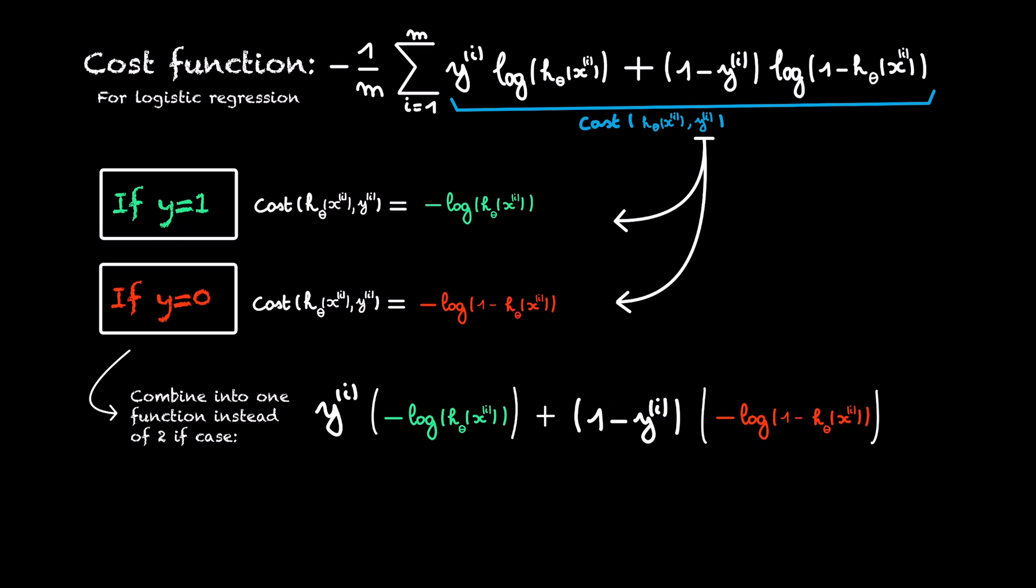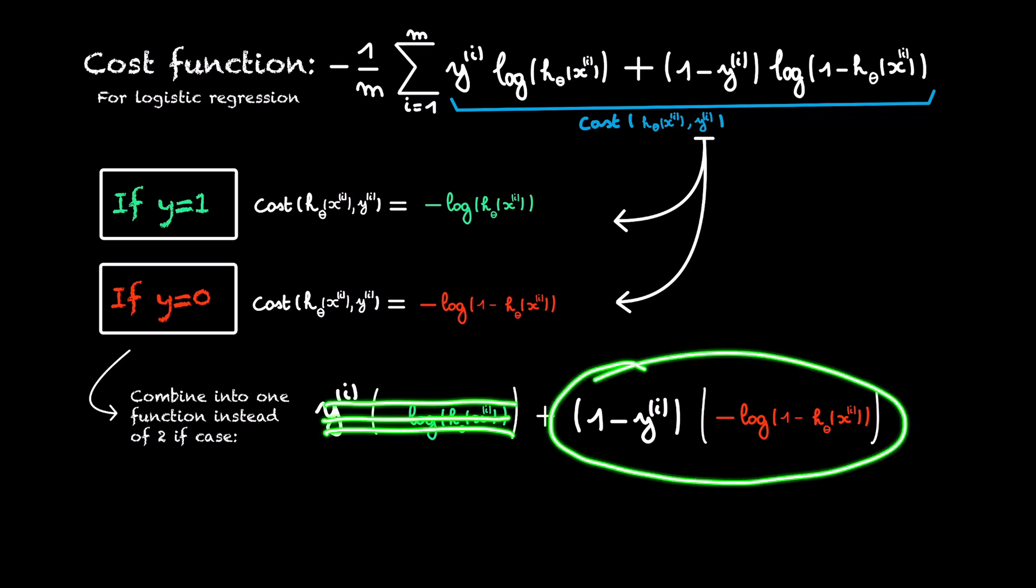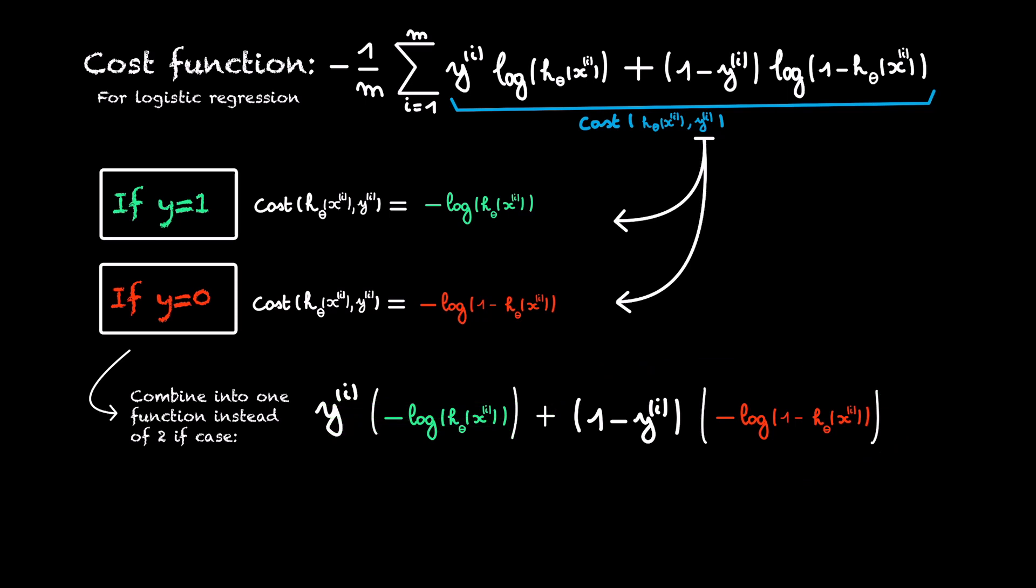if y is zero, this first term will fall away. And our cost function will reduce to only this term. And if you now bring the minus sign outside the summation, you get exactly the same function.